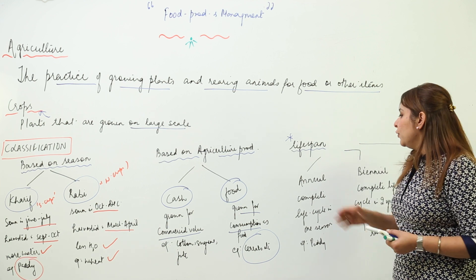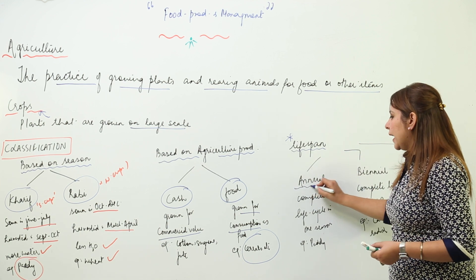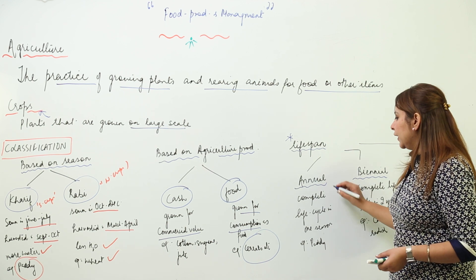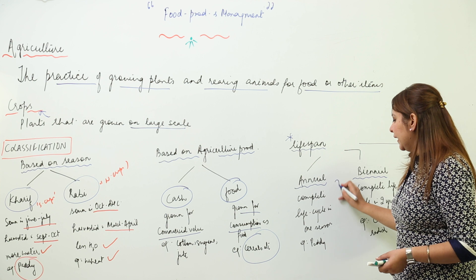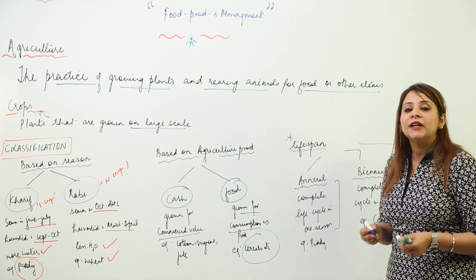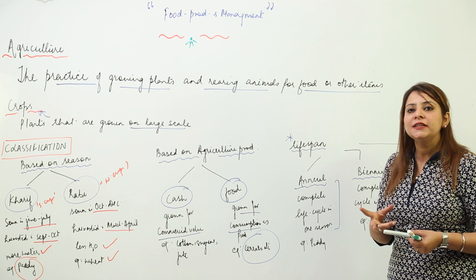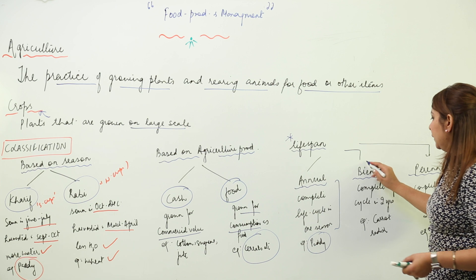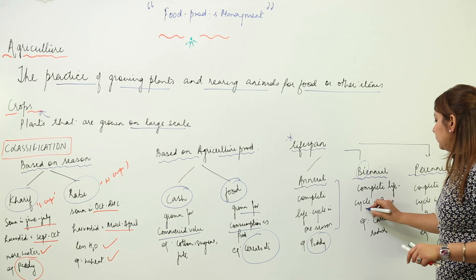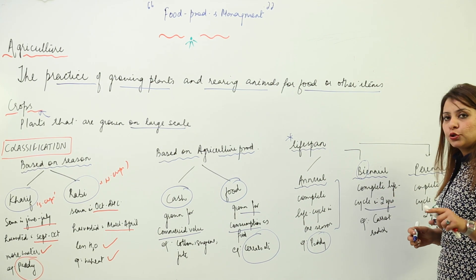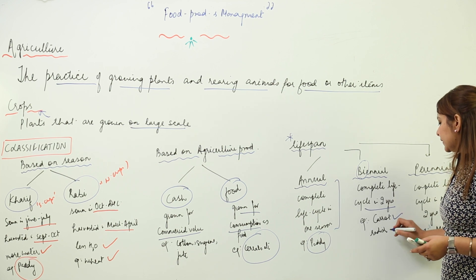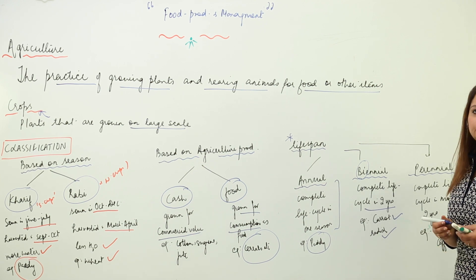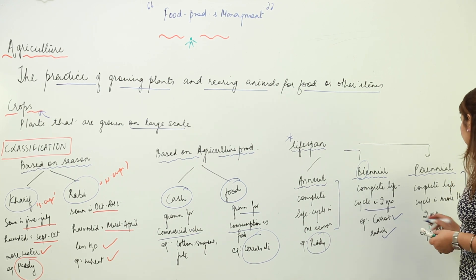Moving on to the third classification based on lifespan, we have three kinds: annual crops, biennial crops, and perennial crops. Annual crops complete their life cycle in one season or one year — for example, paddy. Biennial crops need a minimum of two years or two seasons to complete their life cycle — for example, carrot and radish.